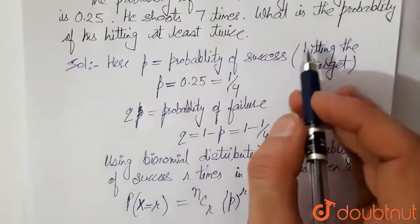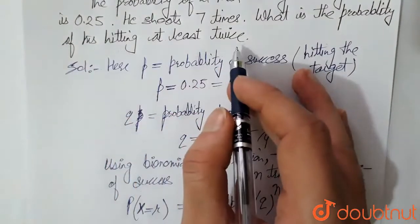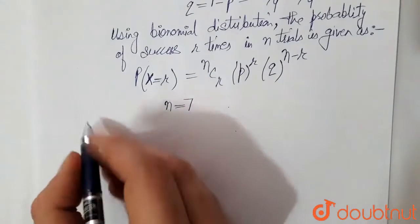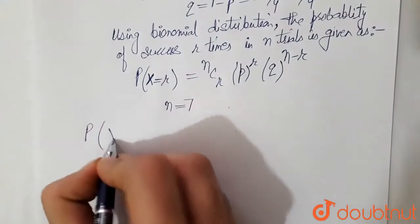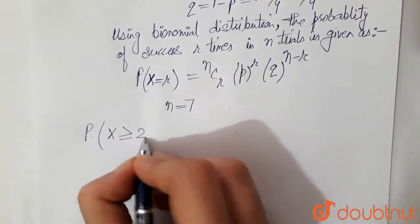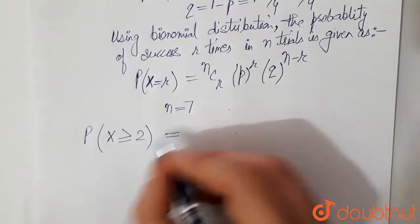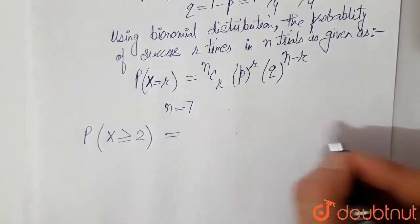Now we have to calculate probability of his hitting at least twice. So probability of x at least twice means x greater than equal to 2 would be equal to probability 2 plus 3 plus 4 plus 5.